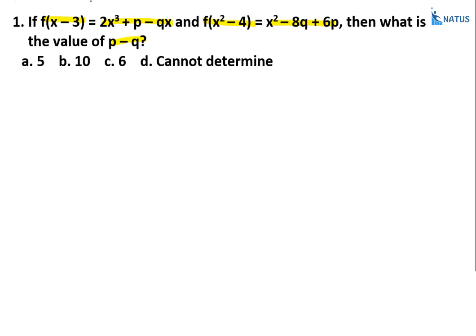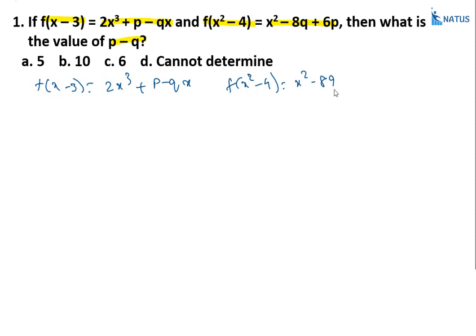Given data: f(x - 3) = 2x³ + p - qx, and f(x² - 4) = x² - 8q + 6p.